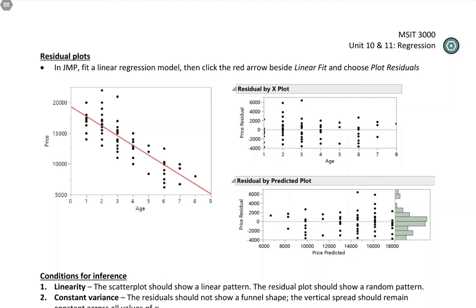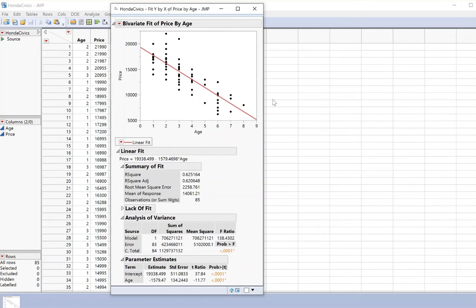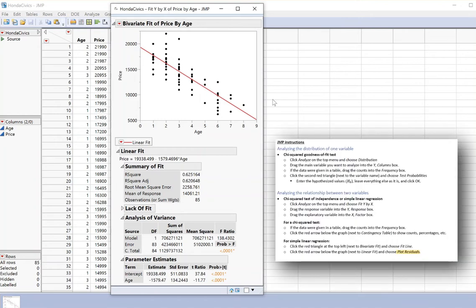If you're going to carry out inference for the slope, you want to make sure that the conditions for inference are met. So to do that, we're going to use some residual plots. It's really straightforward to plot the residuals in JMP, and there's a note about how to do it on your reference sheet.